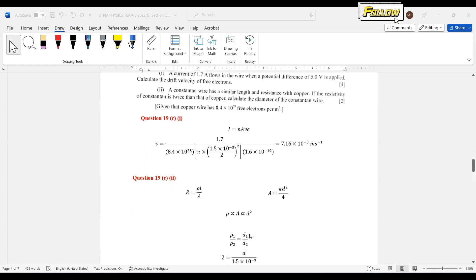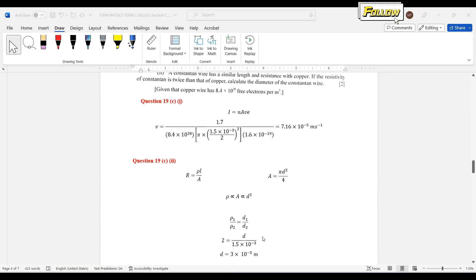From here, we can build the equation ρ₁/ρ₂ = d₁²/d₂². The statement says that the resistivity of the constantin is twice that of copper, so ρ₁/ρ₂ is equal to 2. The diameter of the copper is given as 1.5 millimeters. So putting in the values here, the diameter is equal to 3 × 10⁻³ meters. So that's all for question 19. Thank you.